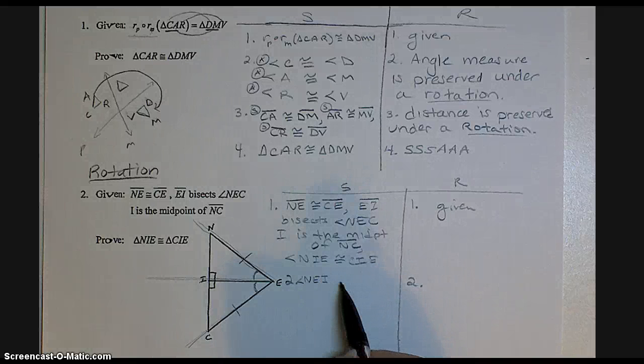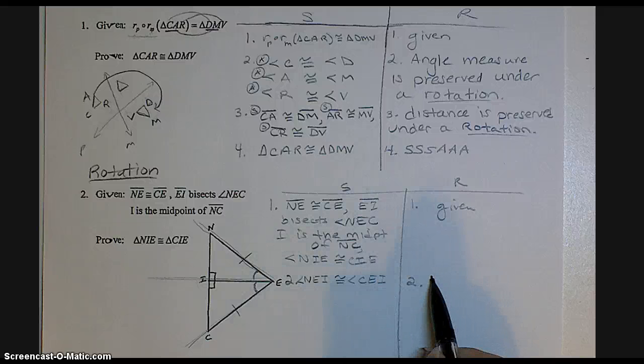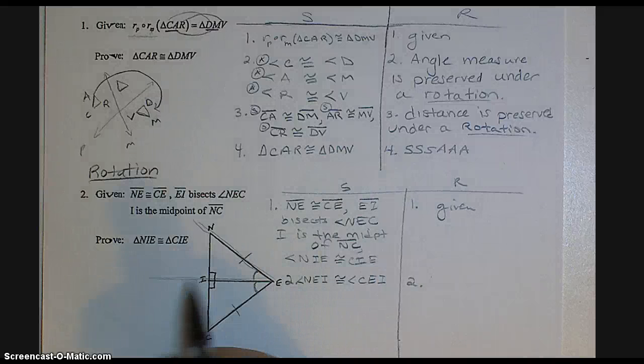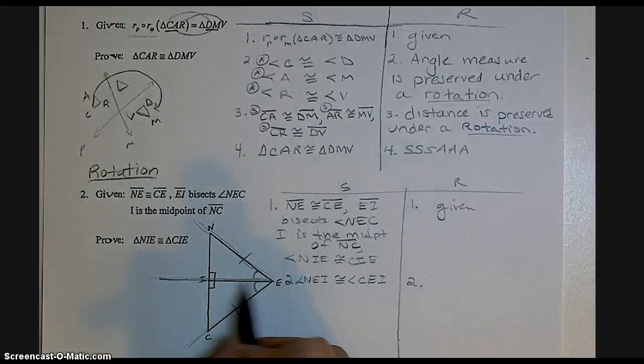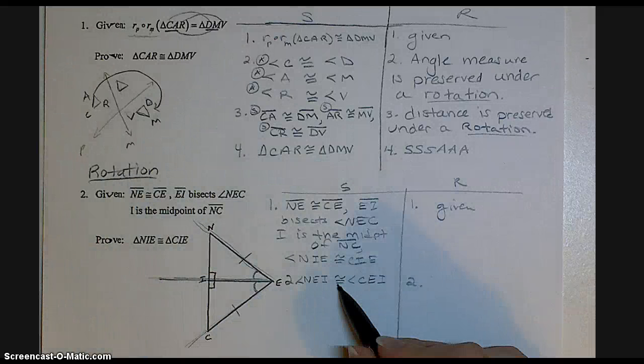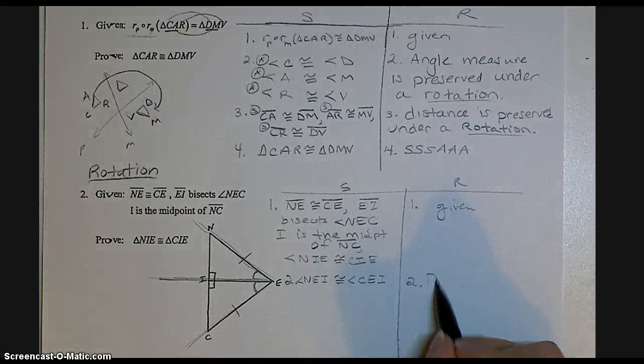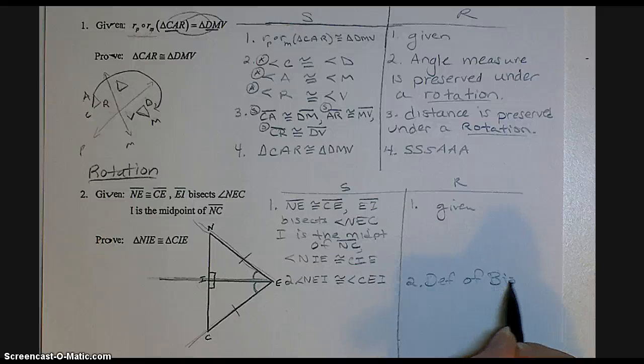Angle NEI is congruent to angle CEI because this is bisecting it, and the definition of a bisector tells us that these would be congruent. So in my reasons, I put definition of bisector.